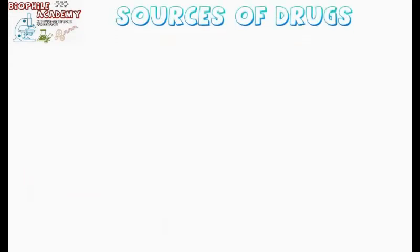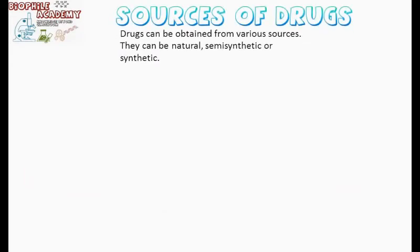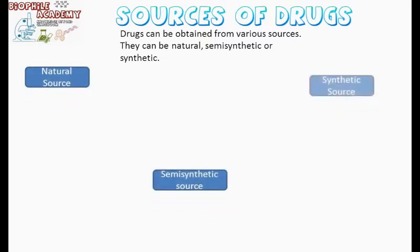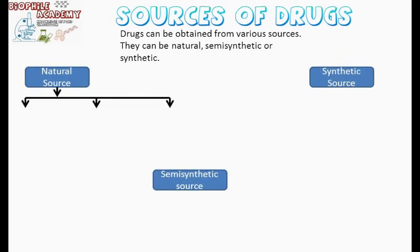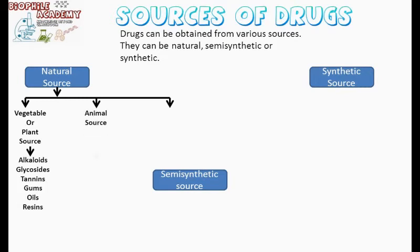Let's move to sources of drugs. Drugs can be obtained from various sources — they can be natural, semi-synthetic, or synthetic, as discussed in the form of a flow chart. Natural plant sources: drugs obtained from plants have several active constituents which generally differ from plant to plant. Some common active principles are alkaloids, glycosides, tannins, gums, oils, and resins. Moving to animal sources: drugs obtained from animal sources include hormones, vitamins, and vaccines.